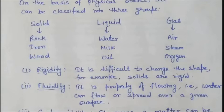The next term is fluidity. Fluidity is the property of flowing. For example, water can flow or spread over a given surface. Due to the large inter-particle distance and very weak force of attraction, gases flow extremely easily. The flowing property in gases is more than in liquids, while solids do not flow.